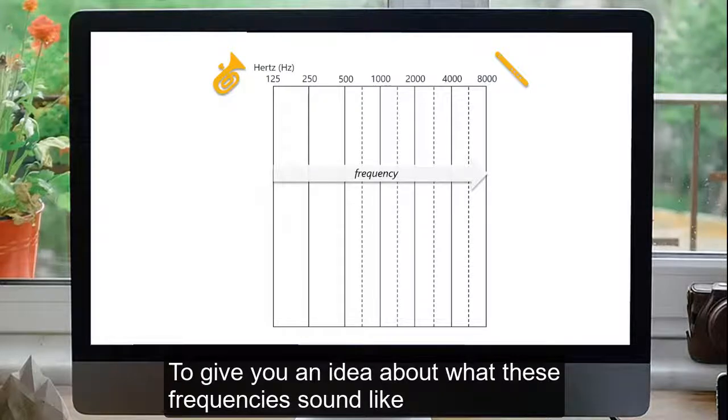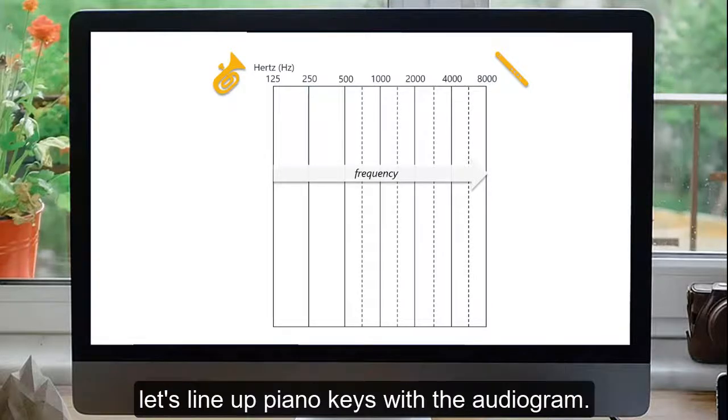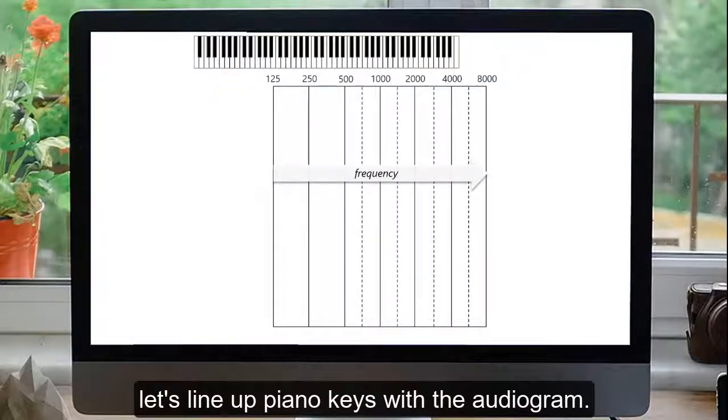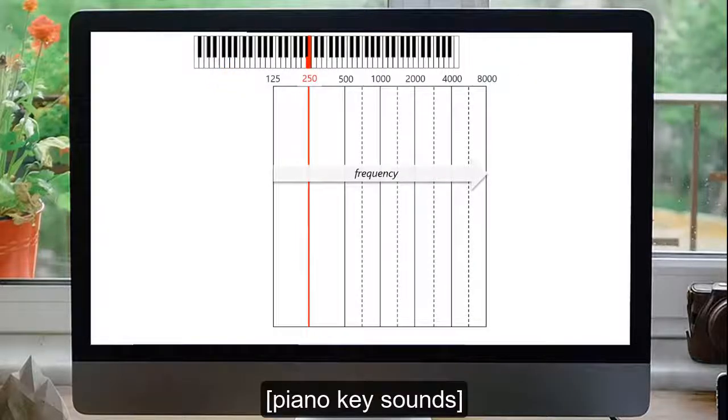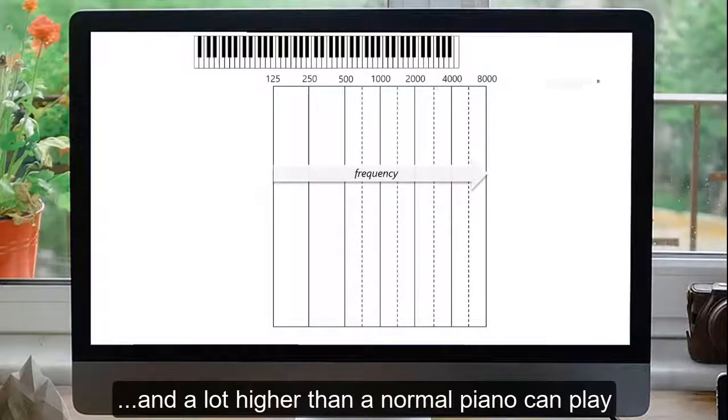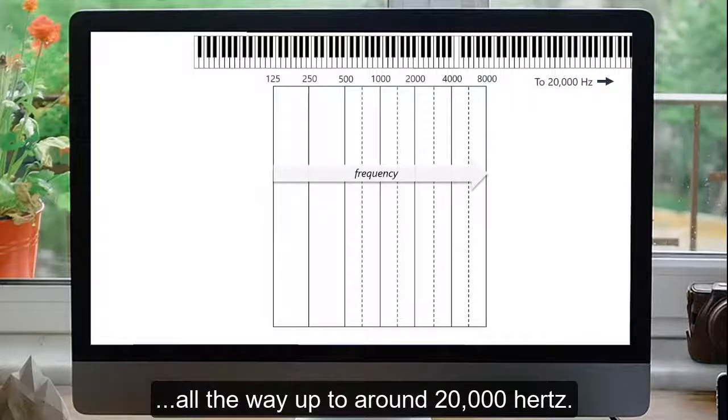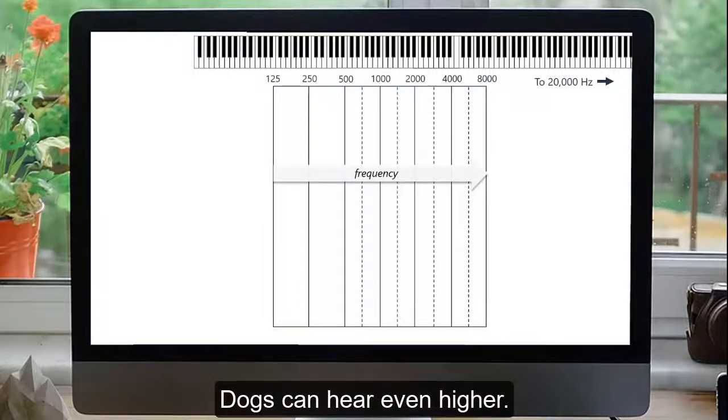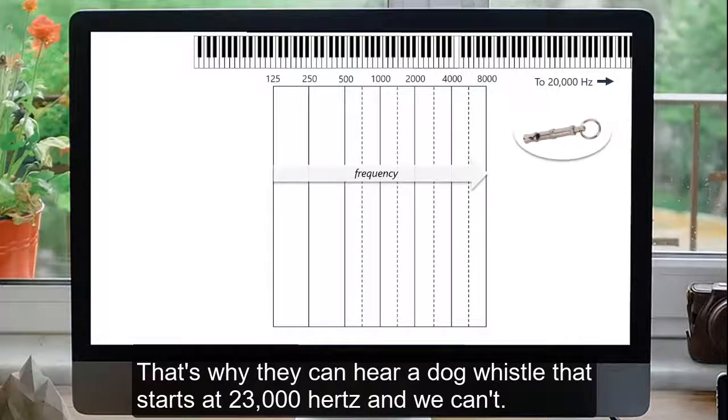To give you an idea about what these frequencies sound like, let's line up piano keys with the audiogram. Most people can hear much higher sounds than this chart shows, and a lot higher than a normal piano can play, all the way up to around 20,000 Hz. Dogs can hear even higher. That's why they can hear a dog whistle that starts at 23,000 Hz, and we can't.